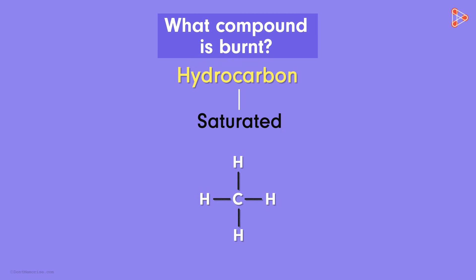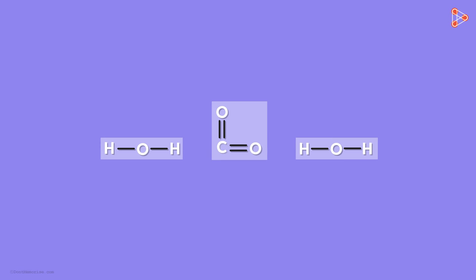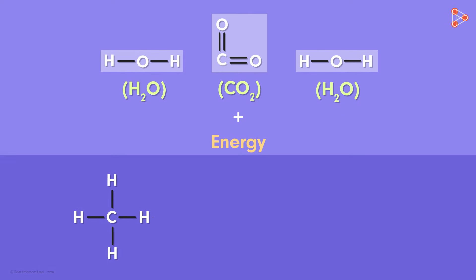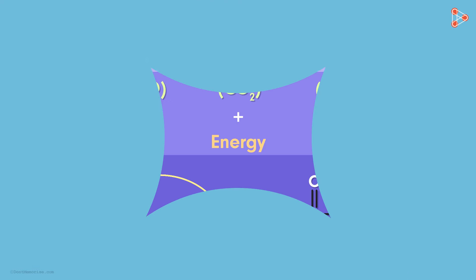Combustion is a process in which the oxygen atoms break through the carbon bonds. That means newer bonds will be formed along with the breaking of older ones. As a result, carbon dioxide and water are formed along with energy liberation. So in case of saturated hydrocarbon, the oxygen atoms are able to break the bonds very easily. That is because there are only single bonds that exist.